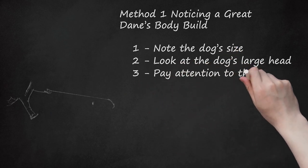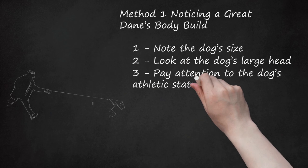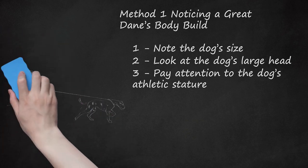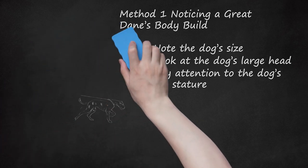Pay attention to the dog's athletic stature. Great Danes have powerful, sleek bodies that are typical in giant working breeds. To identify a Great Dane, look to see that its neck is high-set, long, and narrow. Notice that it has a square frame with a broad chest and strong legs.